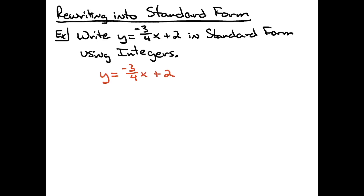Now if it says with integers, I need to get rid of the negative three-fourths because that's a fraction, and I don't want to have a fraction in this. So I'm going to multiply both sides of the equation by the denominator — the least common denominator. So I'm going to multiply the right-hand side by four, and also the left-hand side by four, because whatever you do to one side, you have to do to the other to keep it equivalent.